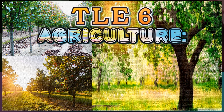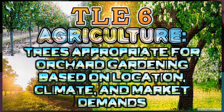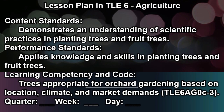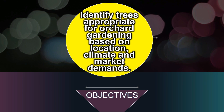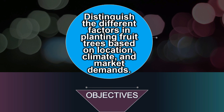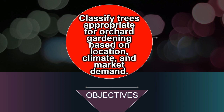TLE 6 Agriculture: trees appropriate for orchard gardening based on location, climate, and market demands. The objectives are: identify trees appropriate for orchard gardening based on location, climate, and market demands; distinguish the different factors in planting fruit trees; and classify trees appropriate for orchard gardening based on location, climate, and market demand.